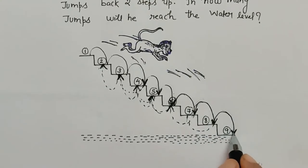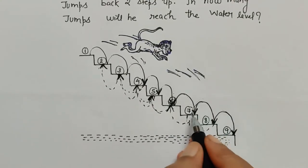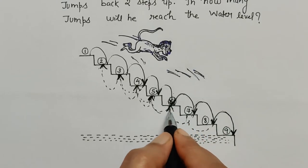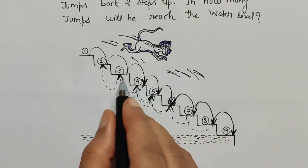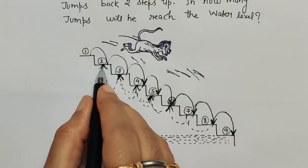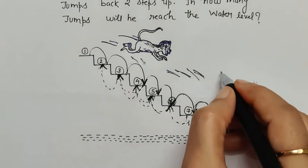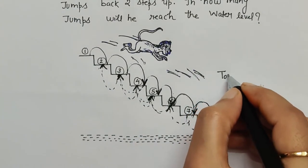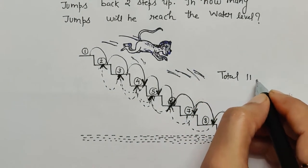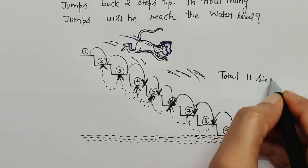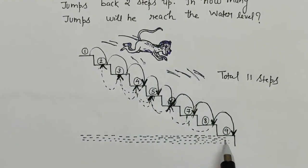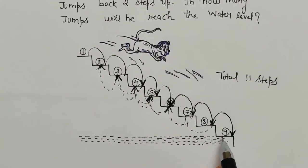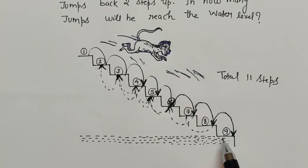Counting the arrows: one, two, three, four, five, six, seven, eight, nine, ten, and eleven. There are a total of eleven steps taken by the monkey to reach the ninth step where the water level is.